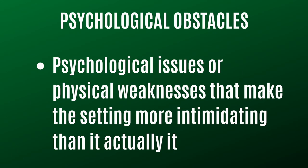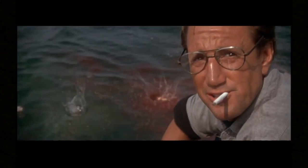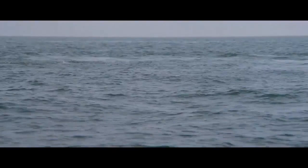The third and final type of setting-related obstacles are character fears and weaknesses — psychological issues, physical weaknesses, or any other weakness that may cause the setting to be more intimidating than it actually is. In the movie Jaws, Chief Brody's goal is to kill a shark. However, he has a severe phobia of water stemming from a near-drowning experience as a child. So when he has to go after a shark, he's going to be around water for much of the movie, and the setting is going to have a psychological impact on him.